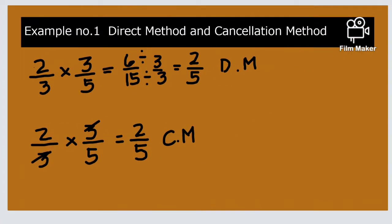Example Number 1: Direct Method and Cancellation Method. This is the given: 2/3 times 3/5. So 2 times 3 is equal to 6, 3 times 5 is equal to 15. But 6 and 15 are divisible by 3. So 6 divided by 3 is 2, 15 divided by 3 is 5. So this is the direct method. Same given, 2/3 times 3/5. We will cancel 3 and 3. So the answer is 2/5.